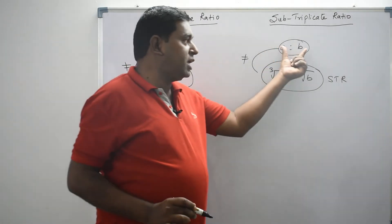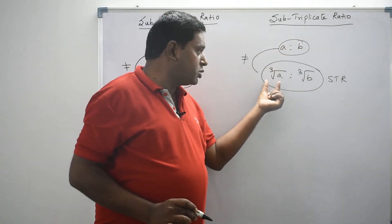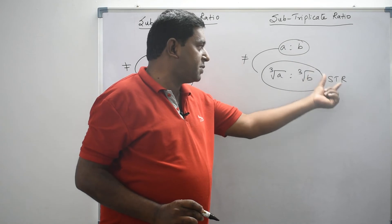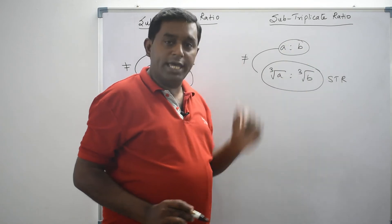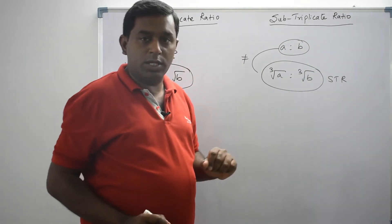a is to b is the given ratio. Cube root of a is to cube root of b is the subtriplicate ratio of a is to b. They are not equal.